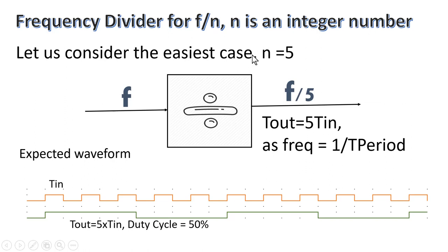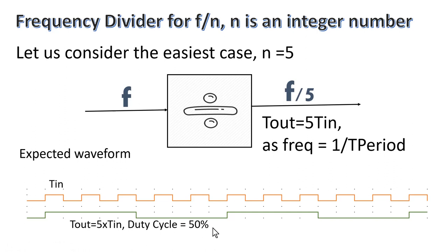Let us consider the easiest case where N is equal to 5. This clock frequency divider has an input signal of frequency F and its output signal will have frequency F by 5. The time period of the output signal will be 5 times the time period of the input signal, as frequency is inversely proportional to time period. We have taken duty cycle as 50%, but in the design process I will show how to get any required duty cycle.